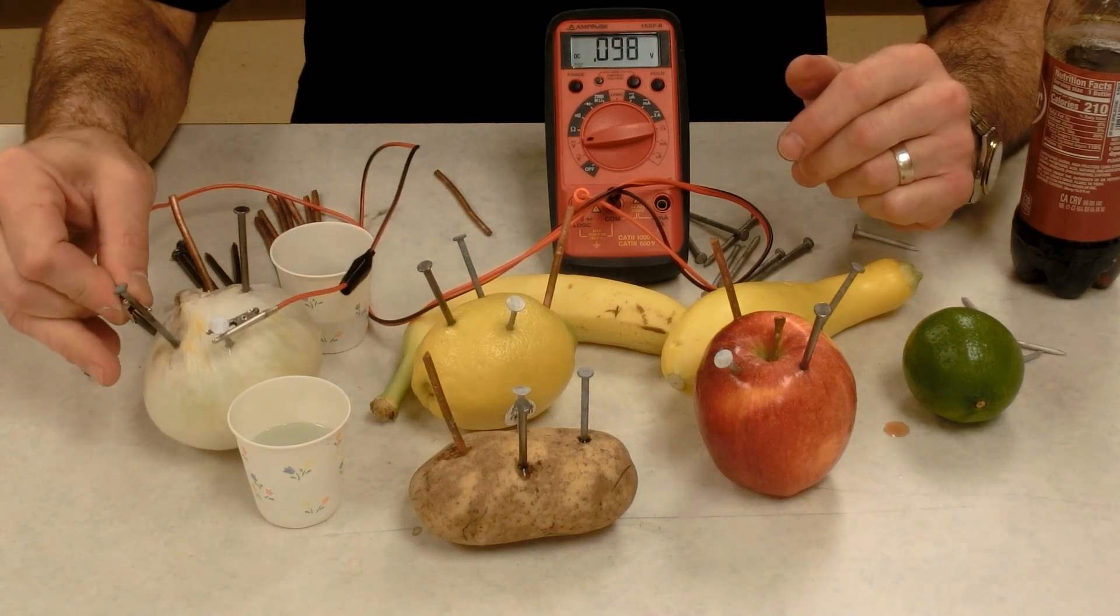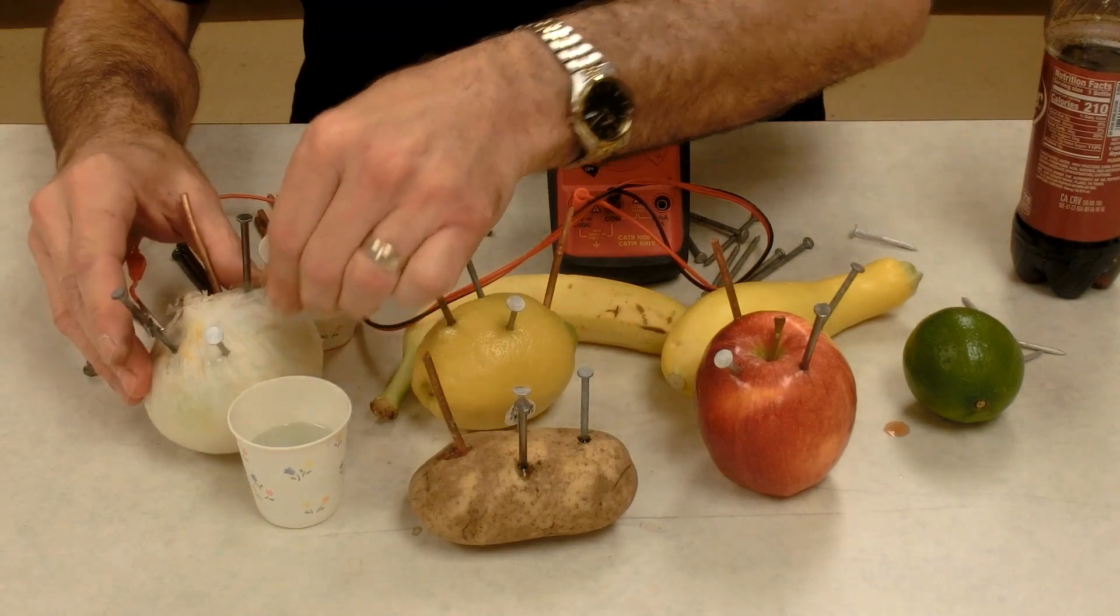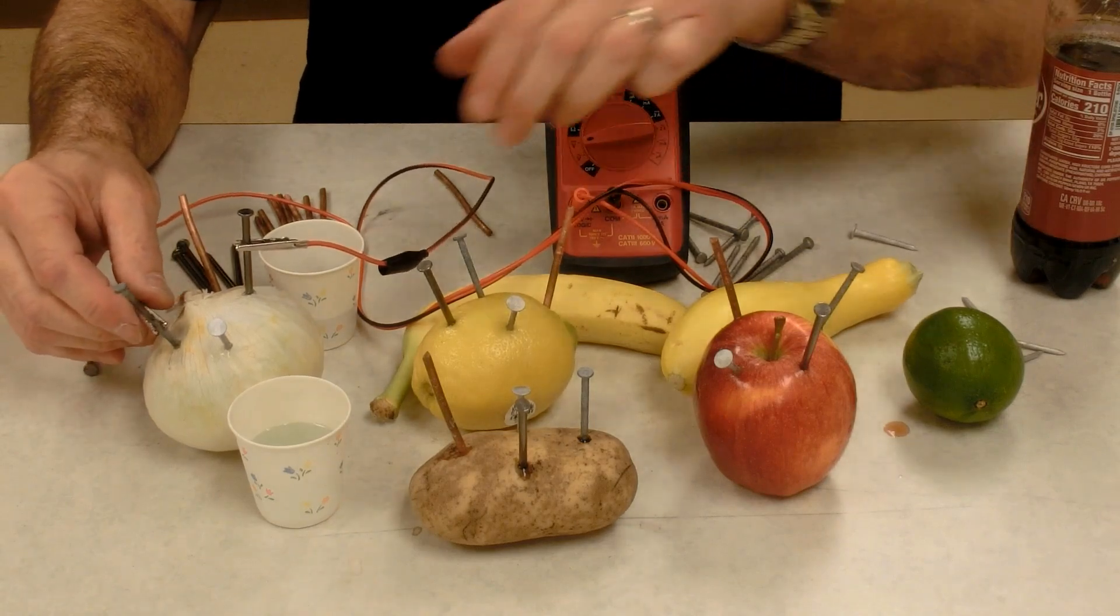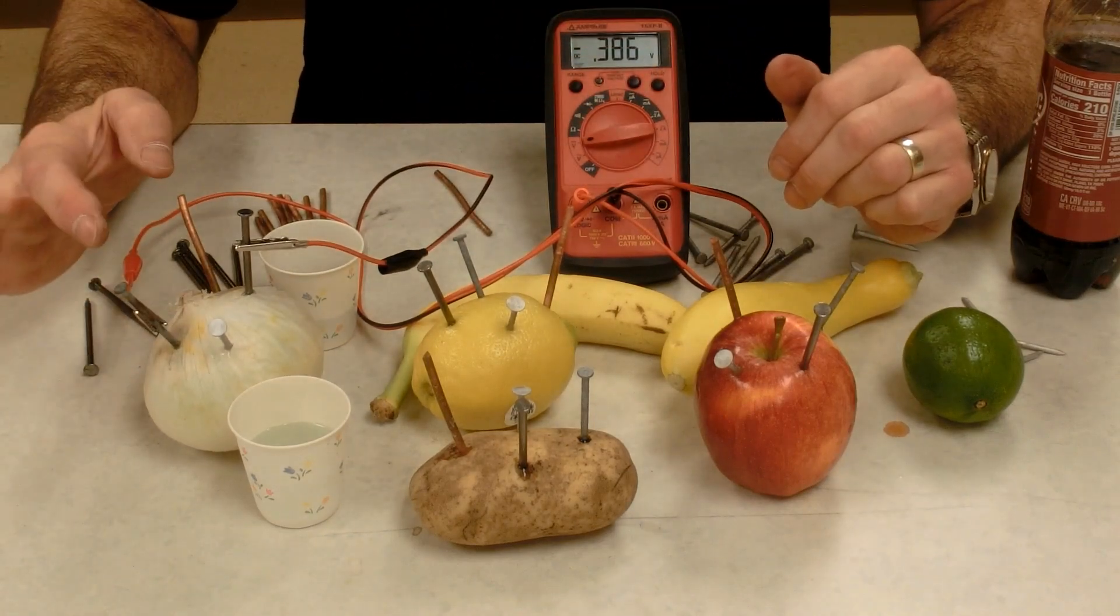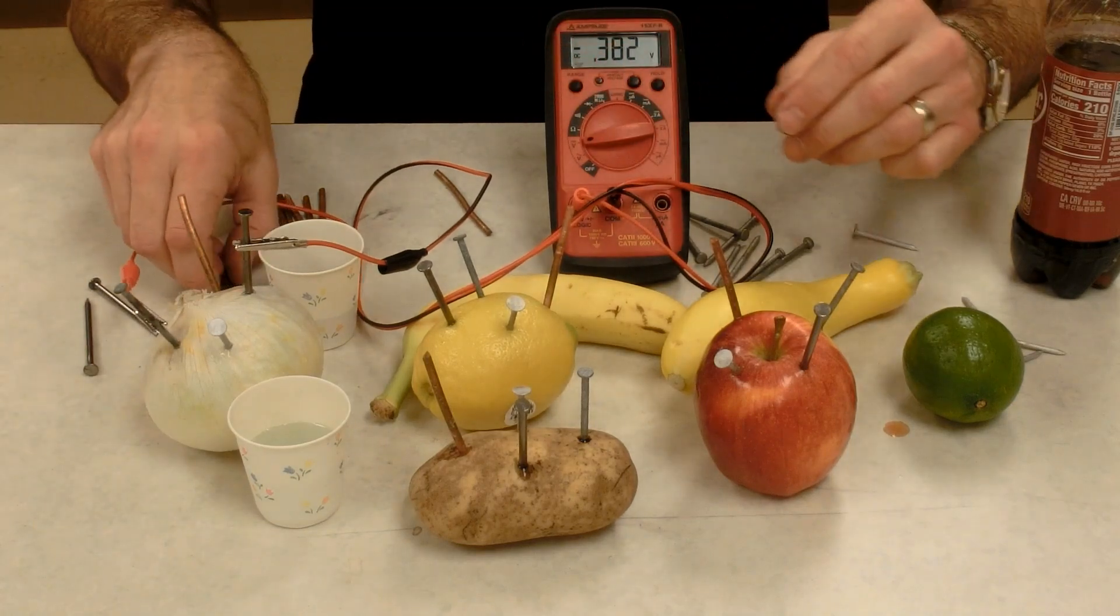Aluminum and zinc, 0.24 volts. Steel and zinc, 0.39 volts. So again, the copper and zinc tended to give us the largest voltage.